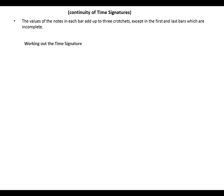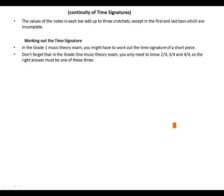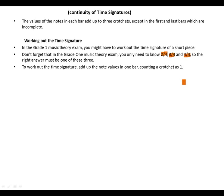Working out the time signature — in the Grade 1 music theory exam you might have to work out the time signature of a short piece. Don't forget that in Grade 1 the answer must be one of 2/4, 3/4, or 4/4. To work out the time signature, add up the note values in one bar, counting a crotchet as one.